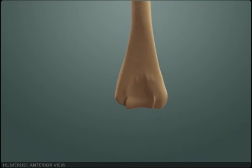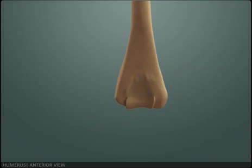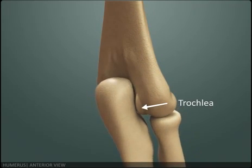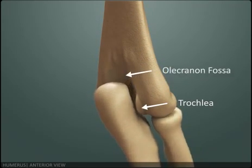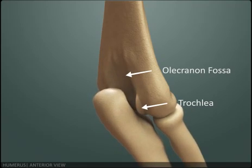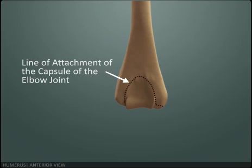This is the lower end of the humerus. Posteriorly, the lower end consists of the trochlea and the olecranon fossa. During extension of the elbow joint, the trochlea articulates with the trochlear notch of the ulna, while the olecranon fossa lodges the olecranon process of the ulna. Remember that the olecranon fossa lies inside the capsule of the elbow joint, but is covered by fat and synovial membrane which separate the fossa from the joint cavity.